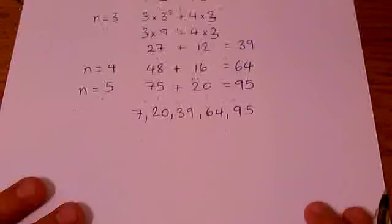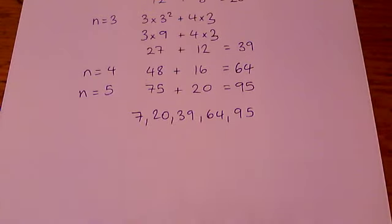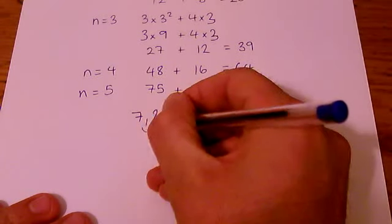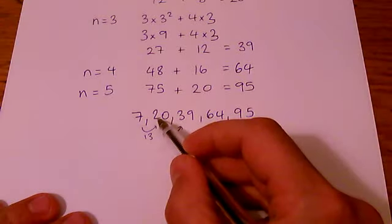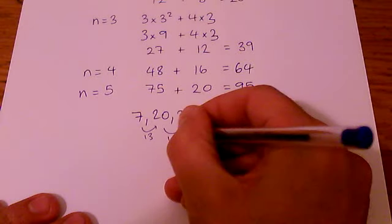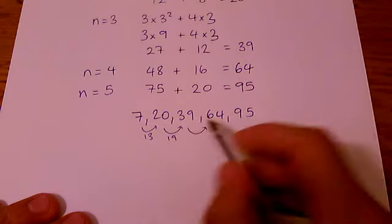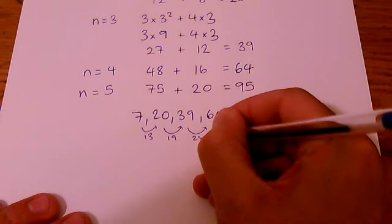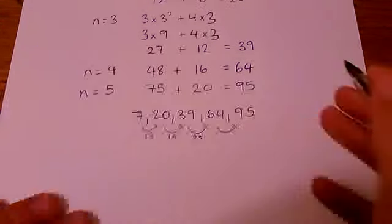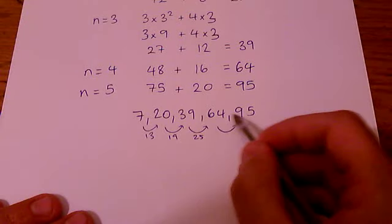Now you can always check a quadratic sequence. If you work out the terms correctly, if you look at the differences here, you get 13 and then you get 19 and this next one is 25 and this next one is 31.